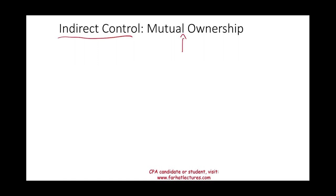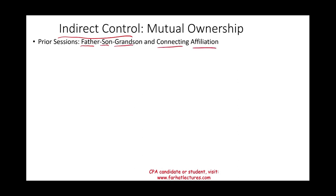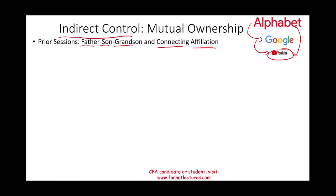Hello and welcome to this session in which we will discuss financial statement consolidation where indirect control exists and the form of control is mutual ownership. In the prior session we looked at two forms of indirect ownership: father-son-grandson and connecting affiliation. In the father-son-grandson example, Alphabet owns Google, Google owns YouTube, so indirectly Alphabet consolidates YouTube because Alphabet controls YouTube through Google.